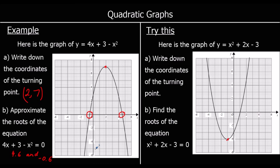Now one for you to try. This time we've got the graph of y = x² + 2x - 3. The coordinates of the turning point are at (-1, -4). For the roots, we look where it crosses the x-axis — where y equals 0. So we've got -3 and 1.